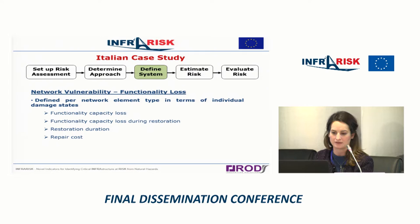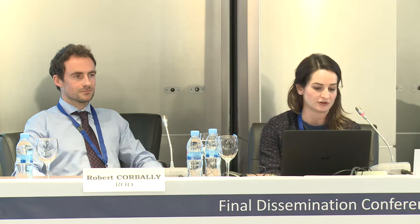To characterise the network vulnerability and consequences, we also considered functionality loss. We looked at functional capacity loss, functional capacity loss during restoration, restoration duration, and repair costs, all related to individual damage states. This enabled us to determine, for a specific scenario, the associated losses in terms of duration, cost, and capacity loss.